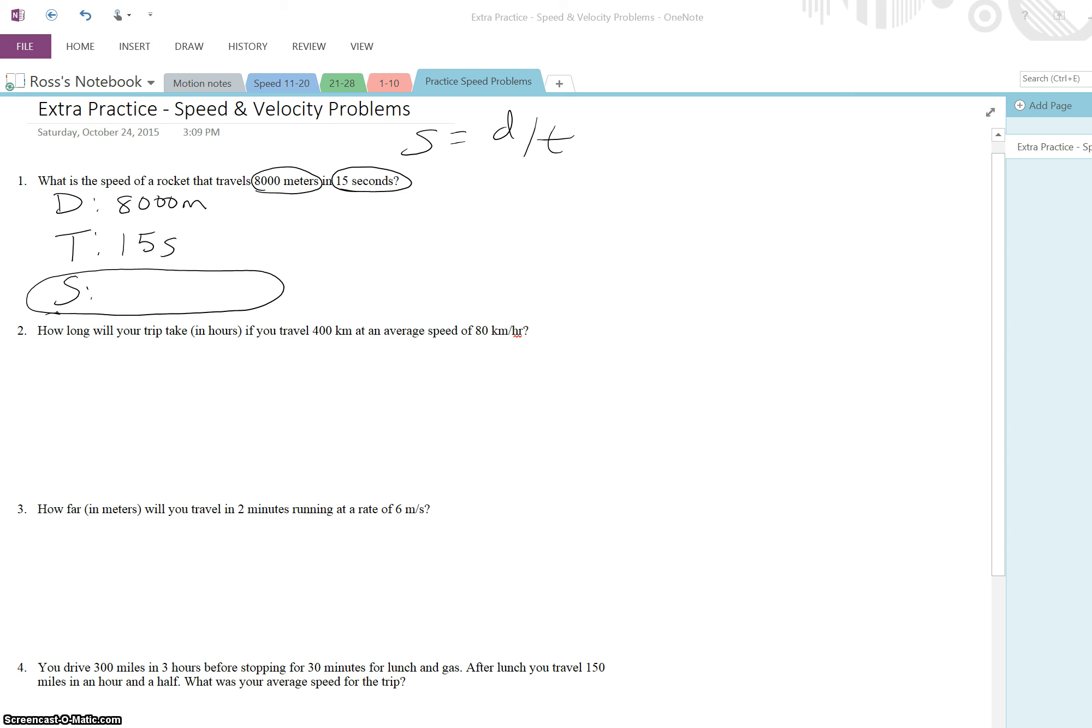So I will circle that one before I even solve the problem. Speed equals distance over time and that works out to 533.3 repeating. So you could either say 3 repeating or 0.34 or something like that. That would be fine. So that is exactly how that problem should look. For every single speed problem we should have D, T, S, one of these three variables circled with the answer inside of it.